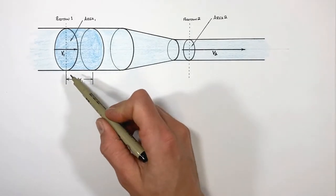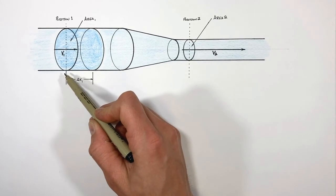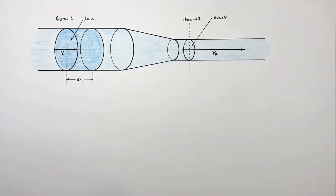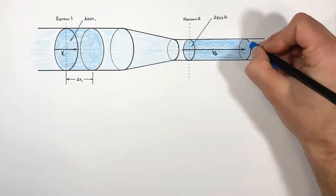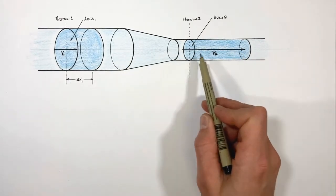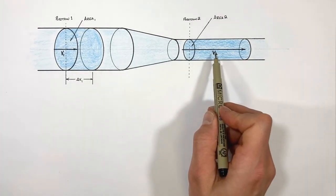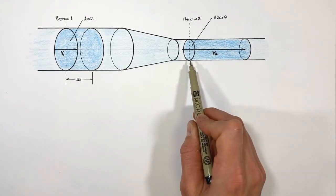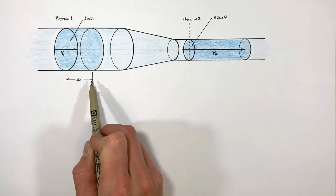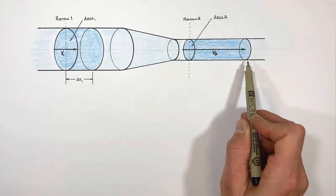The driving concept behind the continuity equation is that the volume of fluid which passes position one in a certain amount of time is going to equal the volume of fluid which passes position two in that same amount of time. You can think of this as a volume of fluid going into the system and a volume going out. Because these two volumes have to be the same, we can relate how far the fluid at position two travels in a given time — we'll call that delta x2 — to delta x1.